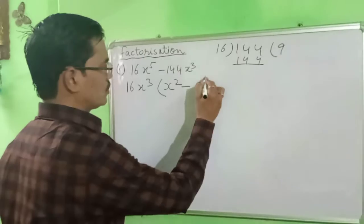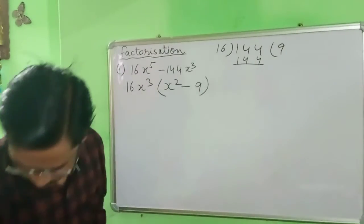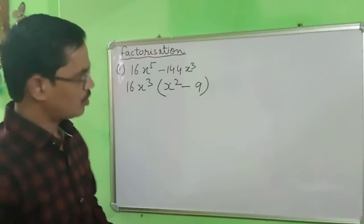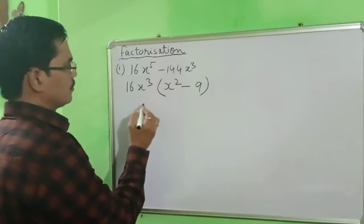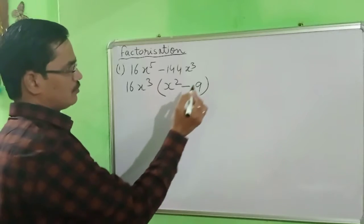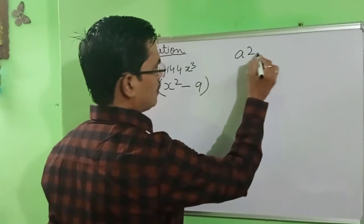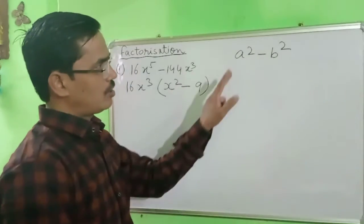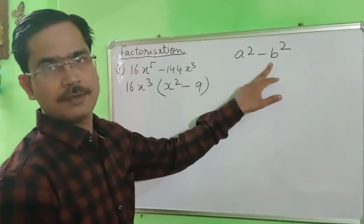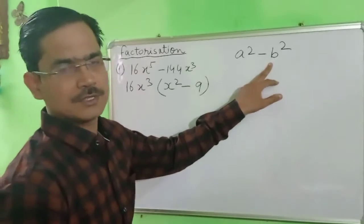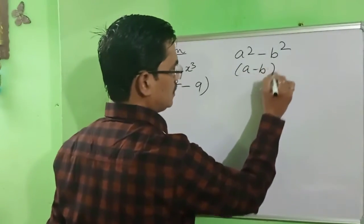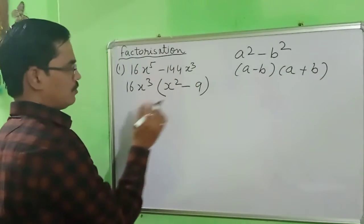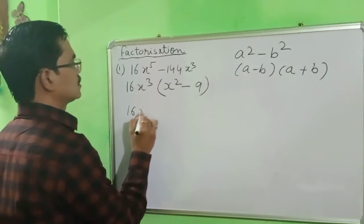Now there is a formula: a² minus b². What is the formula of a² minus b²? The formula of a² minus b² is (a minus b)(a plus b). I am writing here: a minus b and a plus b. This is the formula. With the help of this you can solve here. So we have 16x³ times (x² minus 9).